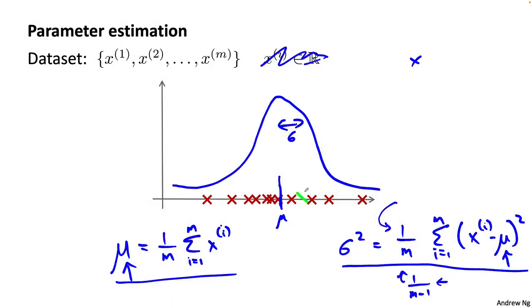You can probably guess what comes next. If you were to get an example over here, then p of x is pretty high. Whereas if you were to get an example way out here, then p of x is pretty low, which is why we would consider this example okay, not really anomalous, looks a lot like the other ones. Whereas an example way out here would be pretty unusual compared to the examples we've seen and therefore more anomalous. Because p of x, which is the height of this curve, is much lower over here on the left compared to this point over here closer to the middle.